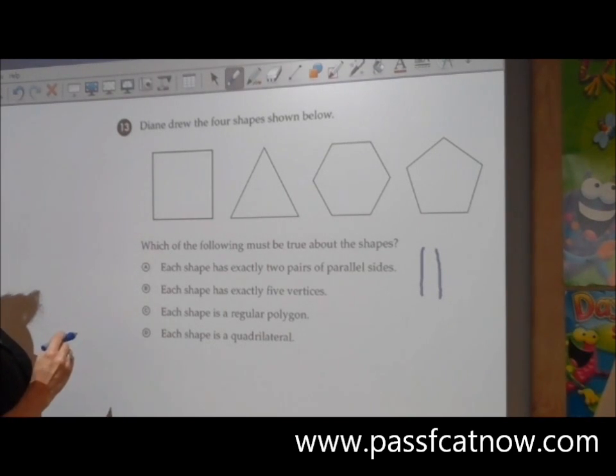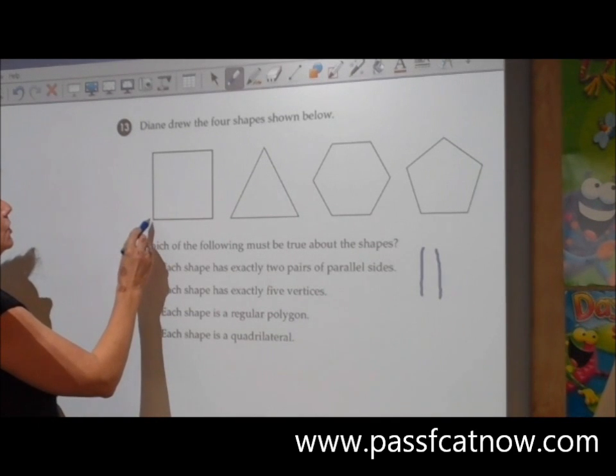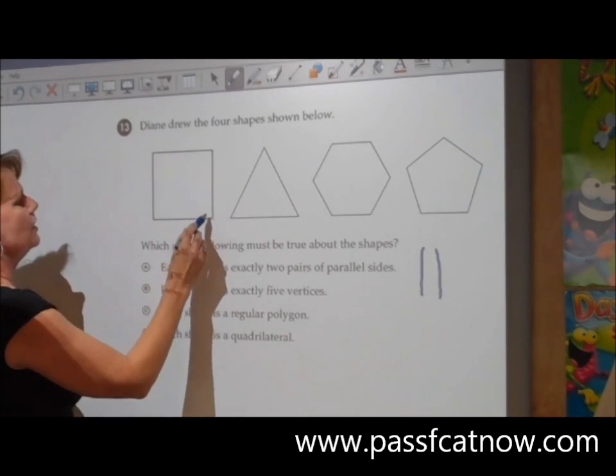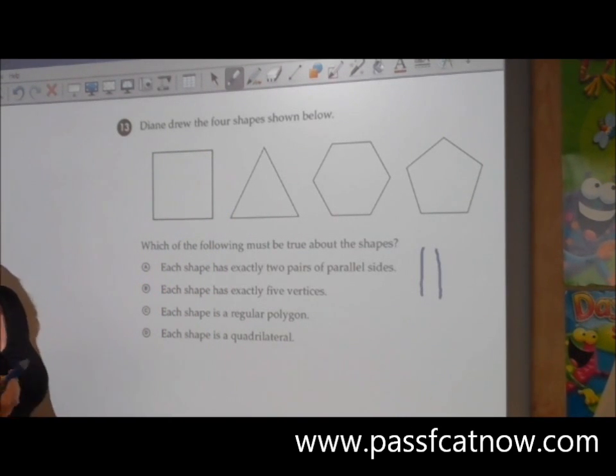Let's see if each shape has exactly five vertices. Vertices are your corners, your angles. One, two, three, four. That doesn't ring true for that one already.